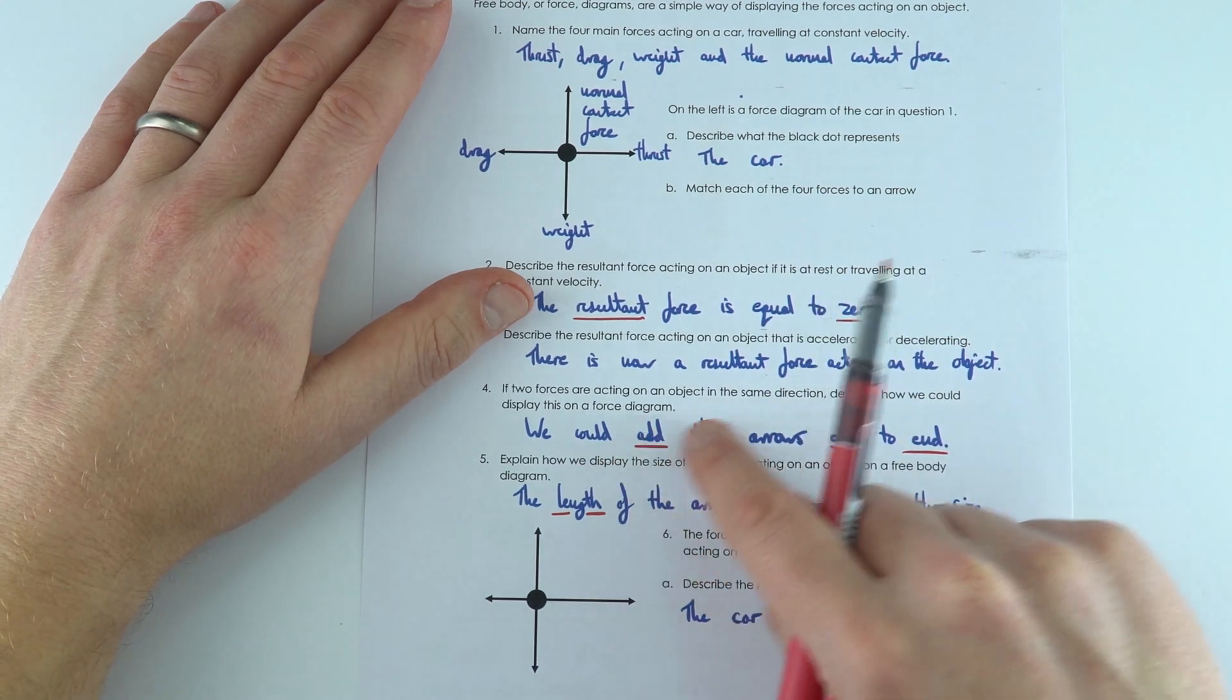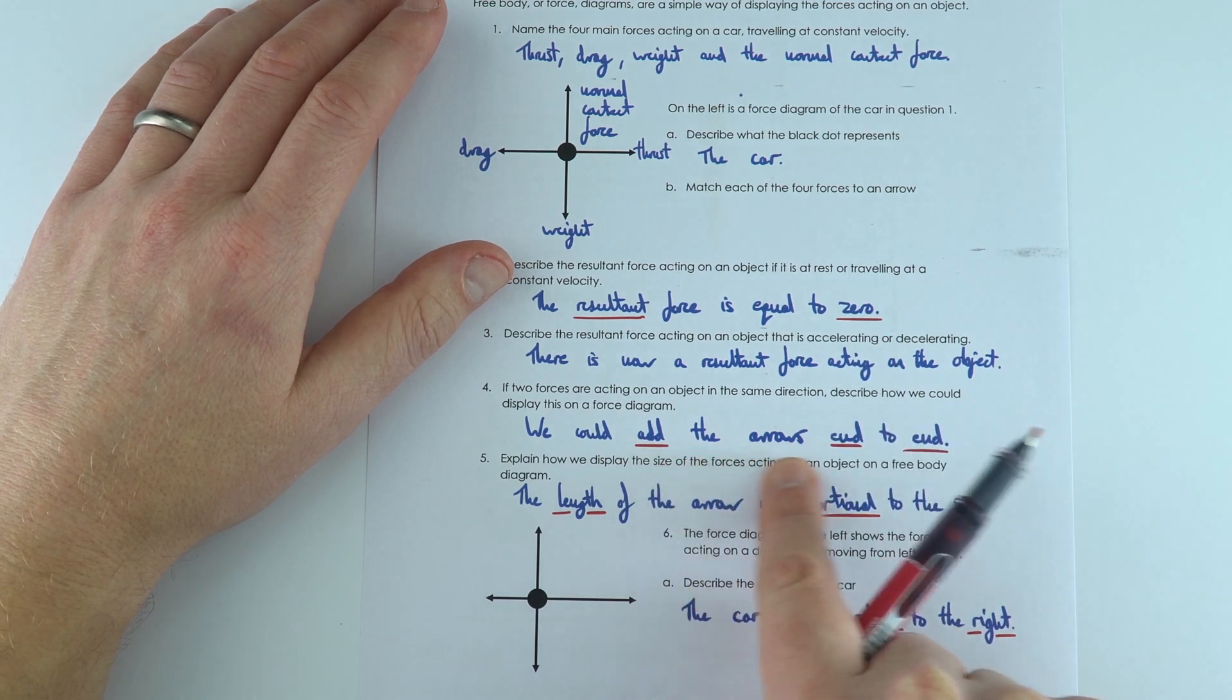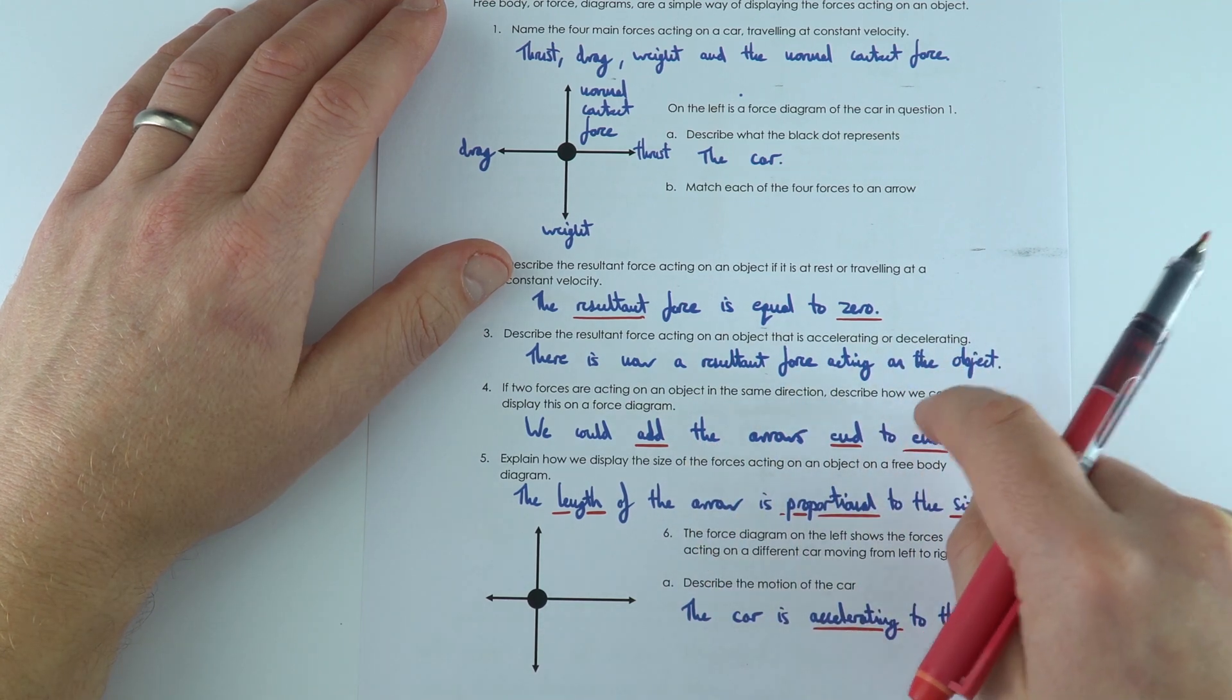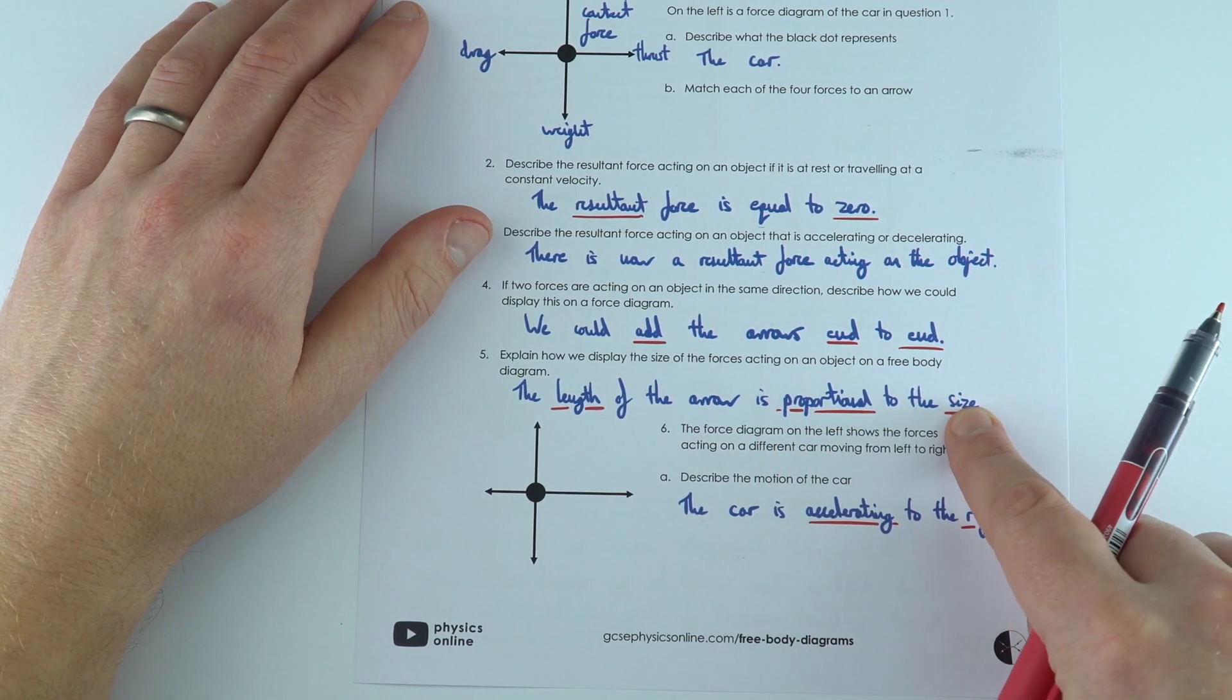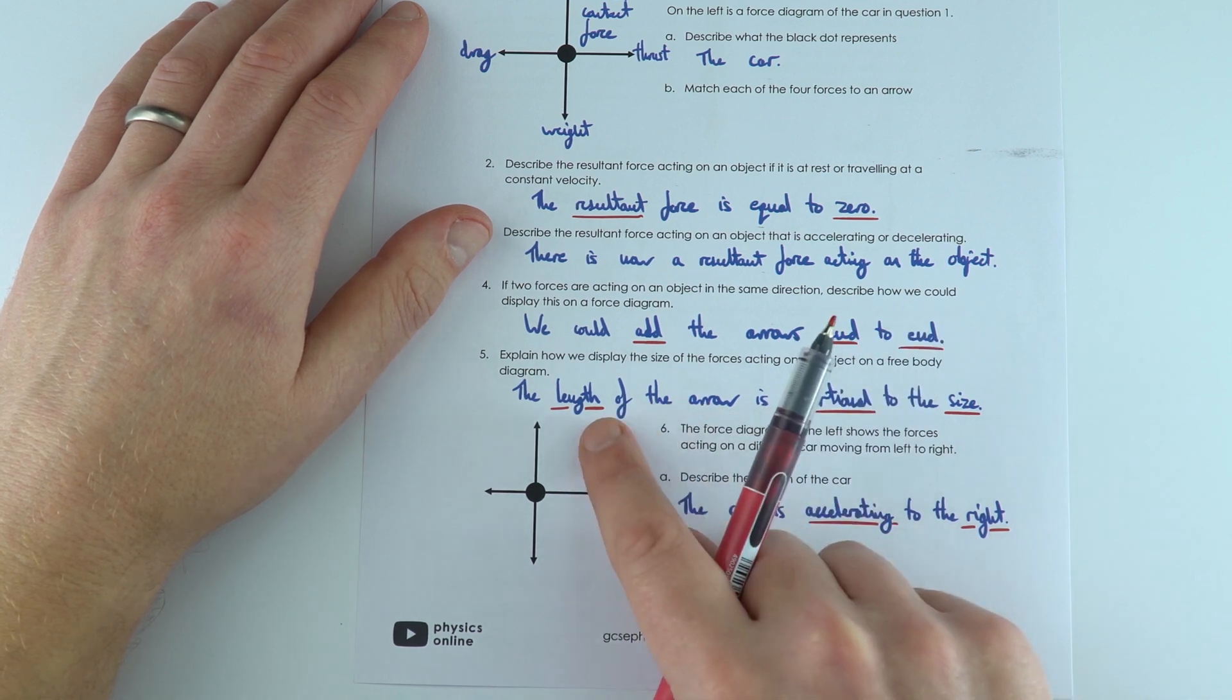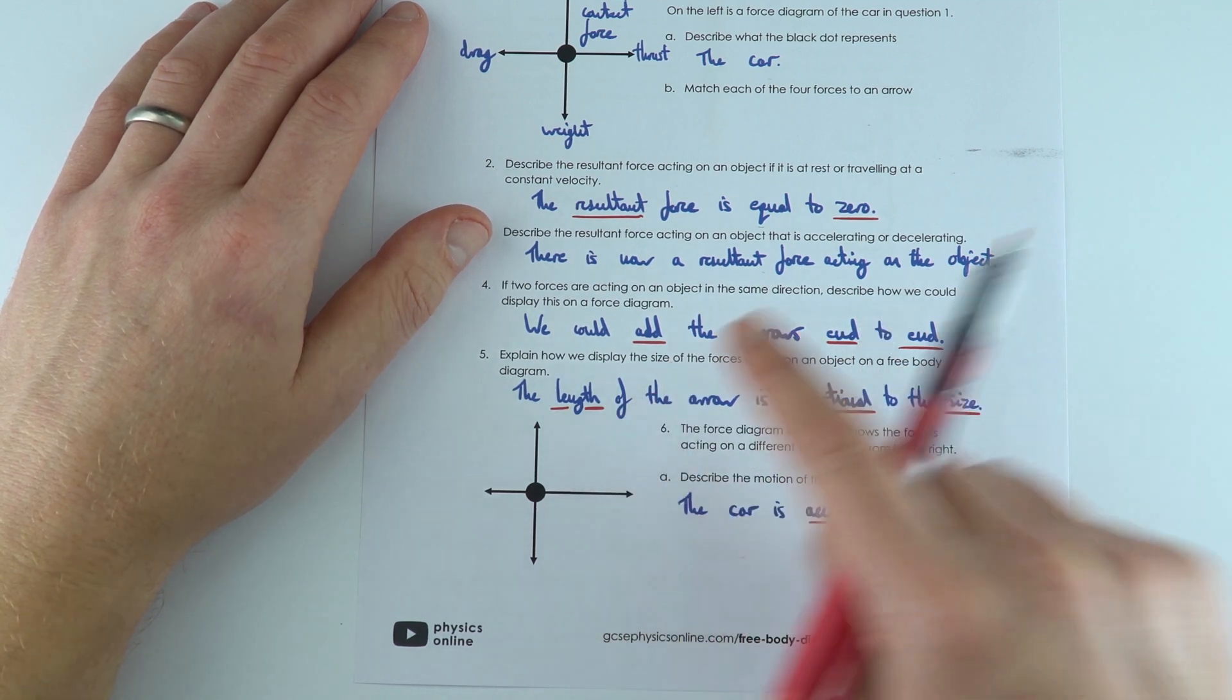Sometimes you might have two forces acting maybe in the same direction. A couple of ways we can do that—we can add the arrows end to end or we could just draw them side by side. There's not just one convention, but the important thing to note is that the length of the arrow is proportional to the size. If you've got a force which is double the size, you need to have double the length of arrow. Make sure that you use your ruler to actually measure out your arrows and draw them as straight lines.